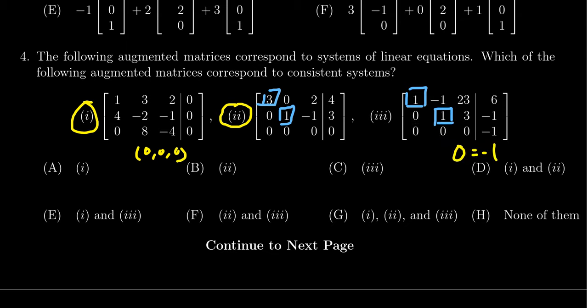There is no solution because there is no choice of the variables x1, x2, and x3 that can force zero to equal negative one.